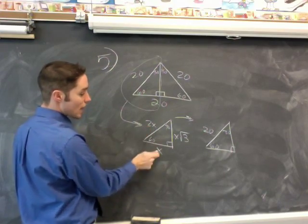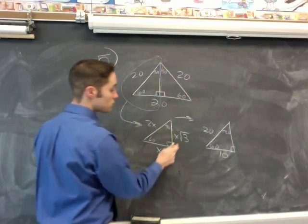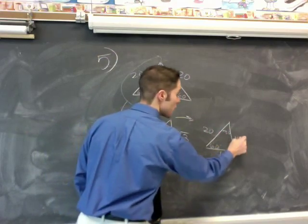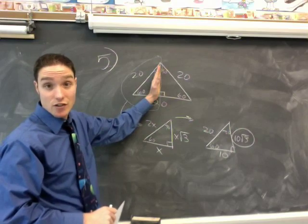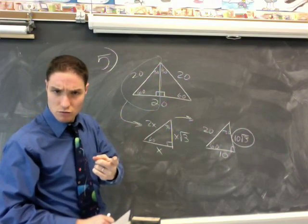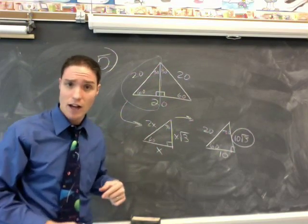So if 2X is 20, X is 10, and this is 10 radical 3. That's the answer. They're looking for the height, the length of the altitude, right? Are you giving me an altitude? Yeah, it's 10 radical 3. Alright, let's move on.